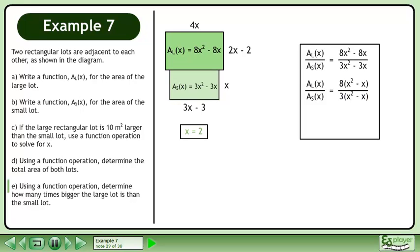Factor out 8 from the numerator and factor out 3 from the denominator. Cancel out the x²-x from the numerator and denominator to get 8 over 3. The large lot is 2.67 times larger than the small lot.